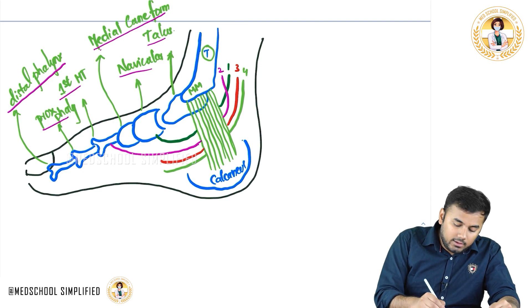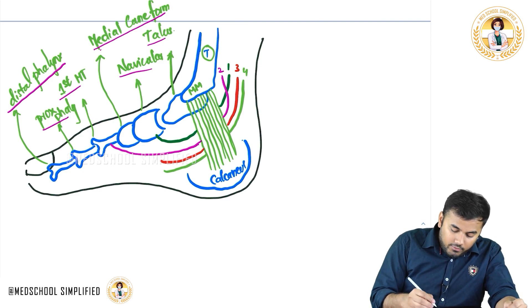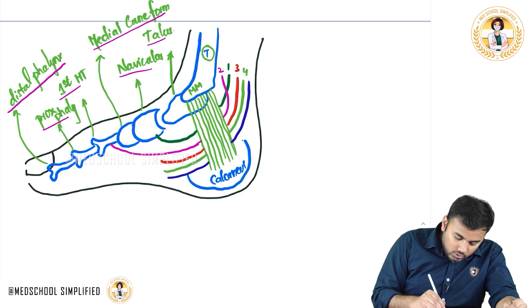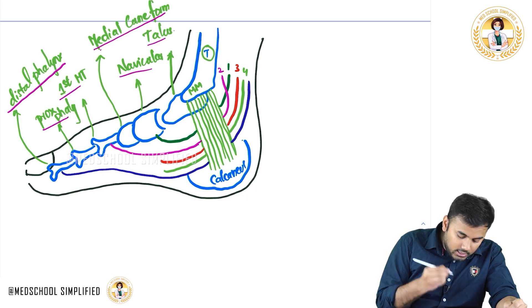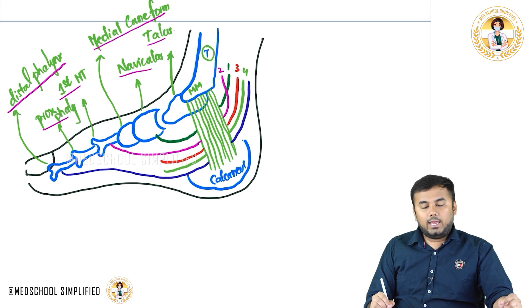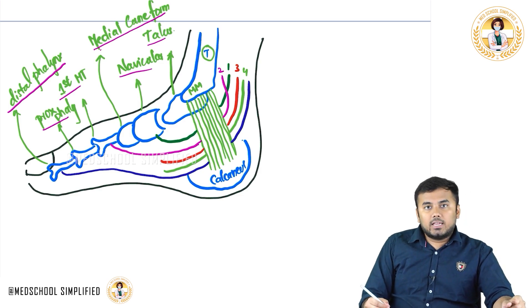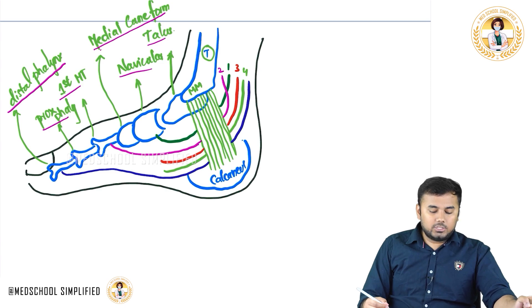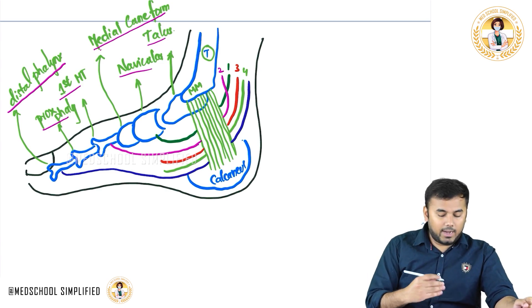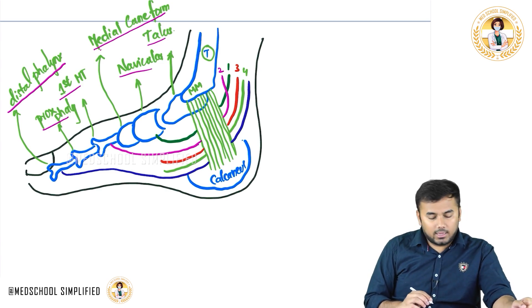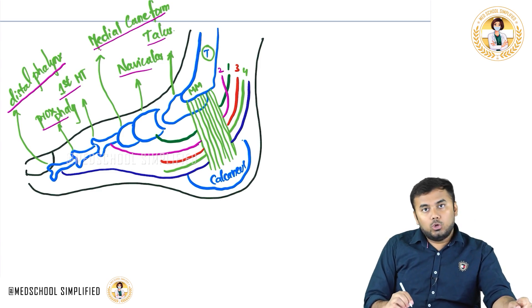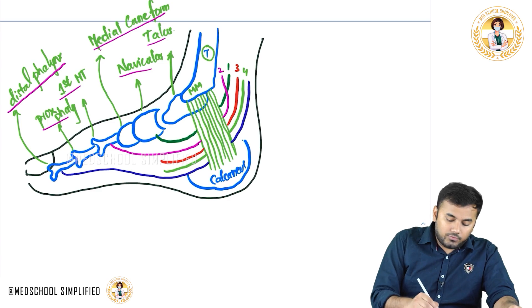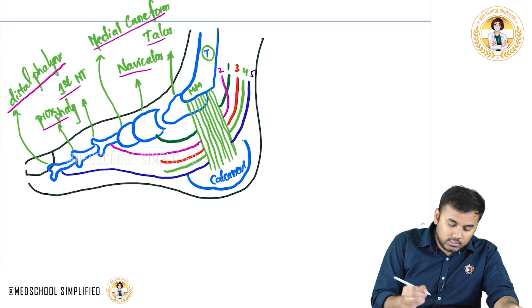Finally here we have got another structure coming all the way down, going and inserting to the distal phalange. This is called flexor hallucis longus. We are discussing the flexor area on the plantar surface, it is attached to the toe — hallucis — and the tendon is long — longus. So flexor hallucis longus.